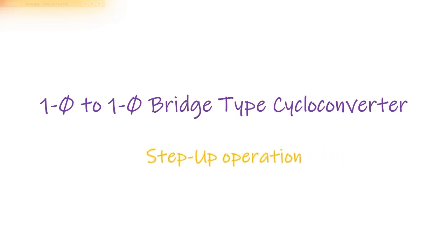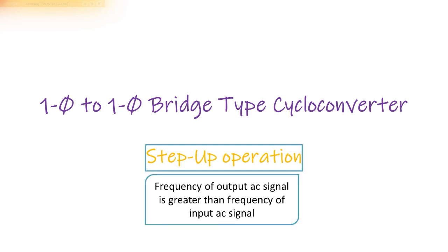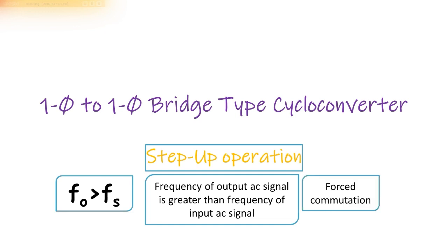This video presentation is on step-up operation of single-phase to single-phase bridge type cycloconverter. In step-up operation, the output frequency is greater than input frequency, so Fo will be greater than Fs. In this type of cycloconverter we have to employ forced commutation.